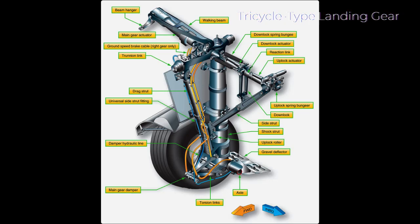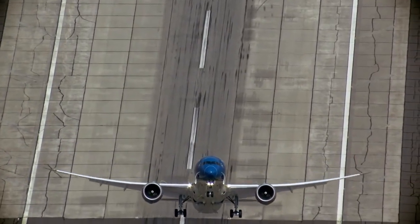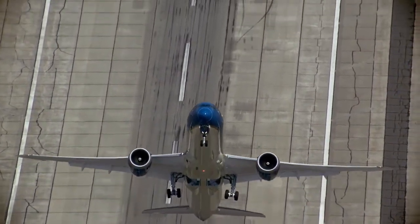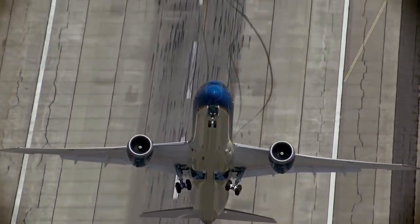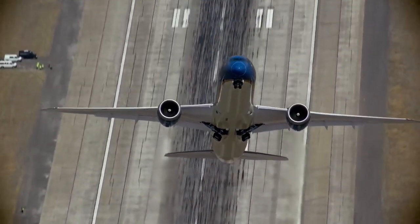A main landing gear of a transport category aircraft is illustrated in a figure with many of the parts identified, serving as an introduction to landing gear nomenclature. Landing gear can be further classified into two categories: fixed and retractable.